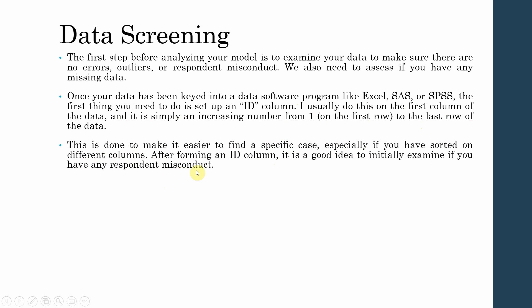If you are collecting data in paper form, as you collect your questionnaires, number each one. Once you number each questionnaire and later find errors in the data, you can go back to the original hard-copy questionnaire. So once you have numbered the paper-format questionnaires, you can go directly to that particular questionnaire and see if you entered the data incorrectly or determine what the correct value should be.